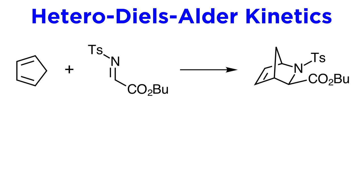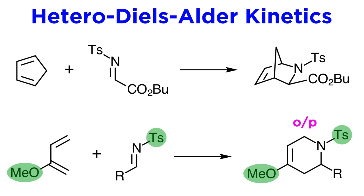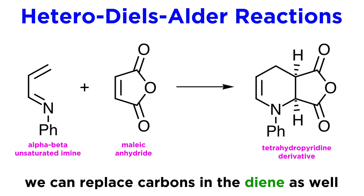If using a diene substituted with electron-donating functionality, such as methoxy, then the methoxy and tosyl groups can end up either ortho or para to one another, but not meta. We can replace carbon atoms with heteroatoms not just on the dienophile, but on the diene as well. For example, let's take our standard butadiene and replace the terminal carbon with a nitrogen. That gives us this alpha-beta unsaturated imine, which can react with something like maleic anhydride to produce this tetrahydropyridine derivative.